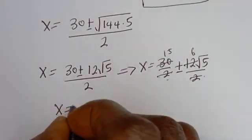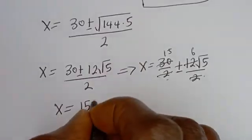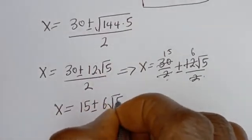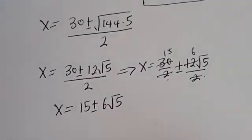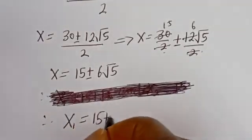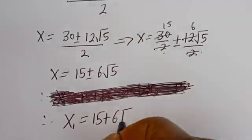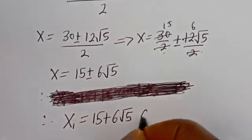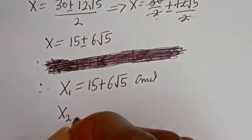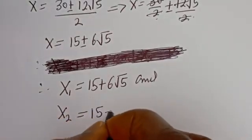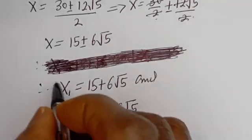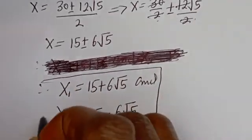Therefore x is equal to 15 plus or minus 6 root 5. So x1 is equal to 15 plus 6 root 5, and x2 is equal to 15 minus 6 root 5. These are the values of x1 and x2.